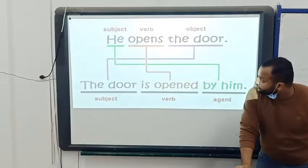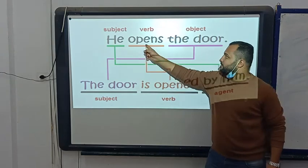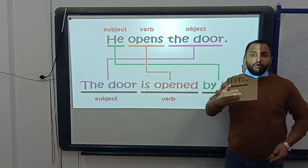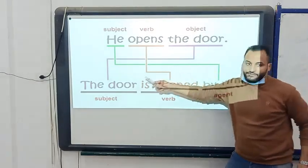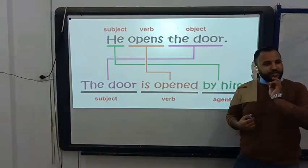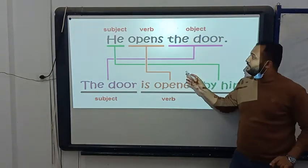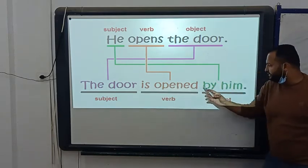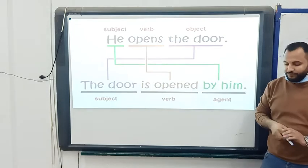After that: He opened the door. He is the subject, opens is the verb, the door is the object — it's called active. To make it passive, I start with the door first. After that, is — because the door is singular. After that, past participle: open, open, opened. So the door is opened by him. It's called passive form or passive voice.